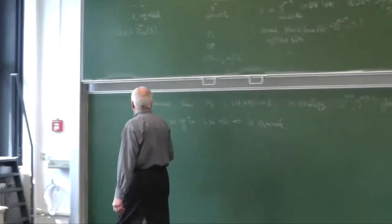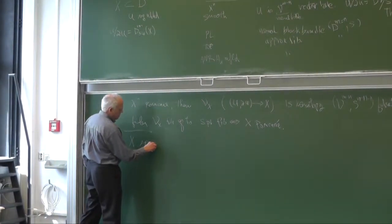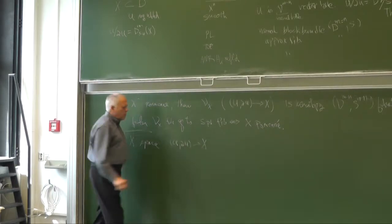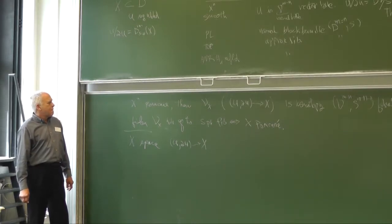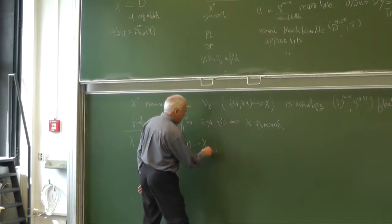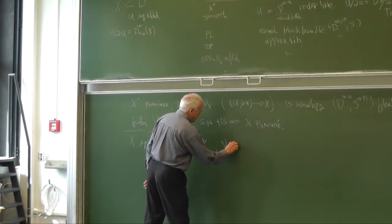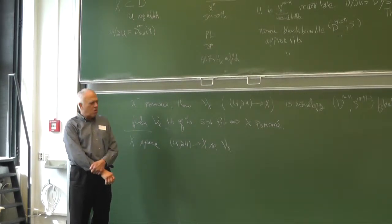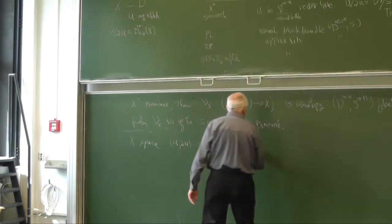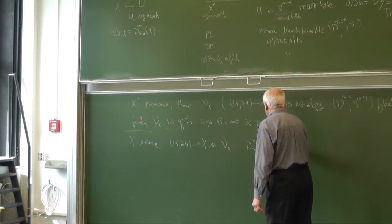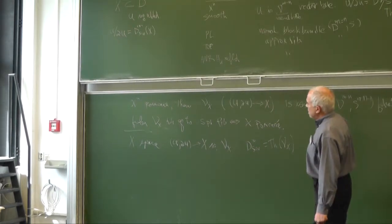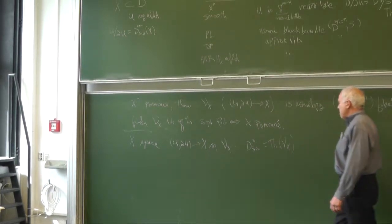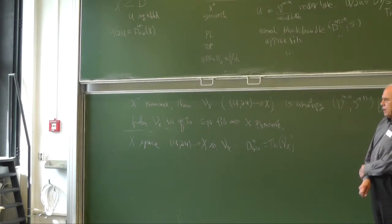And then if X is any space, this has no particular structure, but we will just use the same notation anyway. NU of X denotes the normal thing of X. We can think of the Spanier-Whitehead dual as the Thom space of the normal thing, whatever it is.